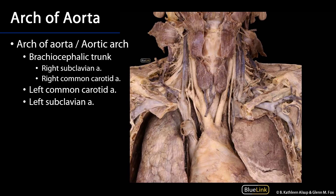As we take a closer look at the branches coming from the arch of the aorta — and you'll have to excuse this image because there's still pericardium on these great vessels — we can see the brachiocephalic trunk, the left common carotid artery, and the left subclavian artery. That brachiocephalic trunk is going to branch into the right subclavian artery and the right common carotid artery.